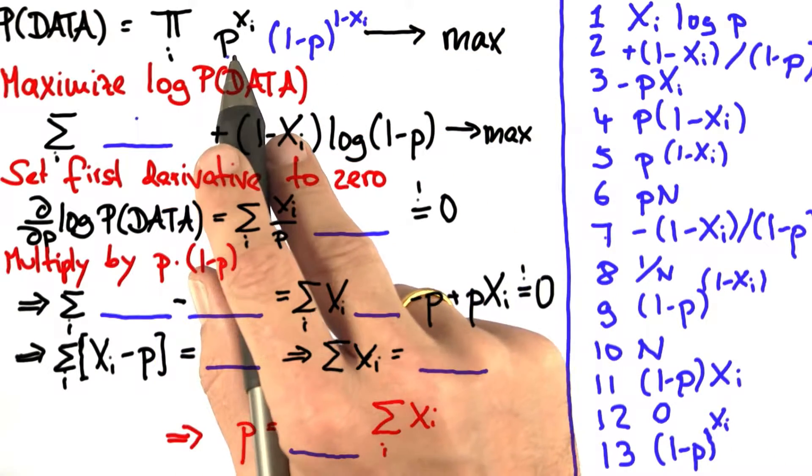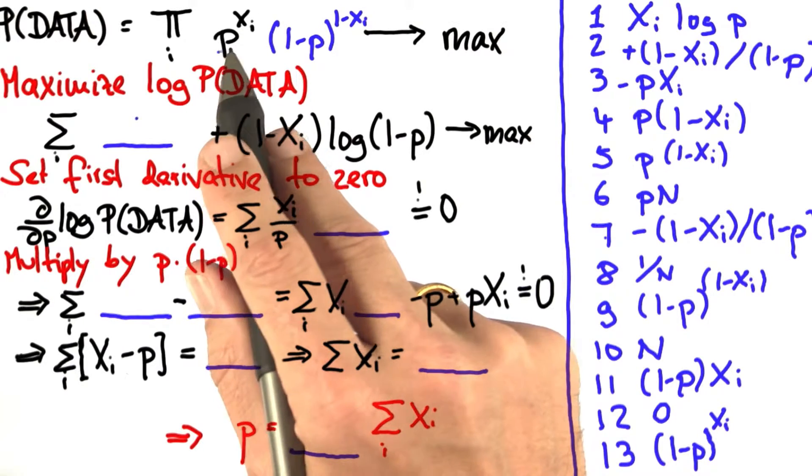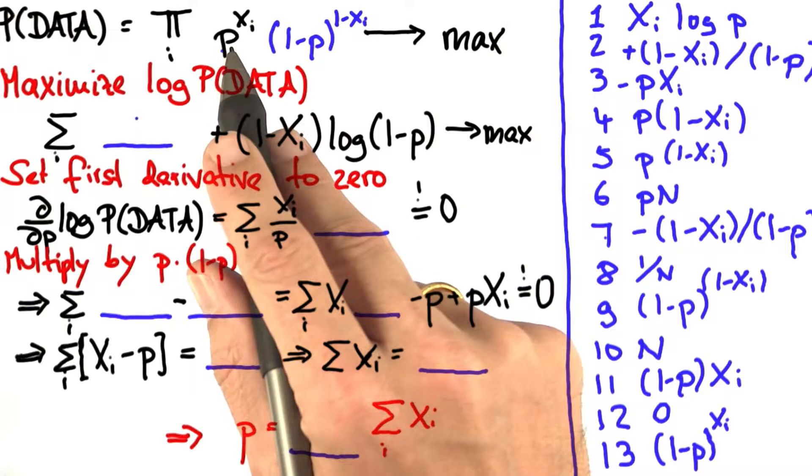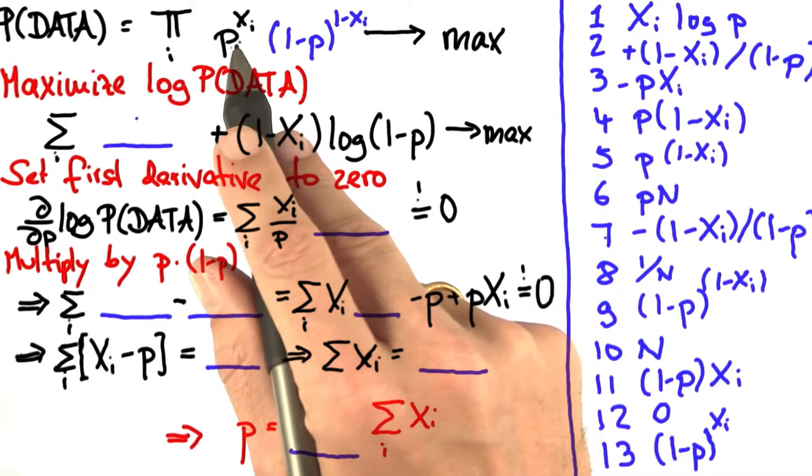The reason why I wrote p to the xi over here is because we already learned every time we see heads, we want to multiply in p. So by putting this in the exponent, when xi equals 1, we multiply in p. And if xi equals 0, we multiply in 1, which has no effect.